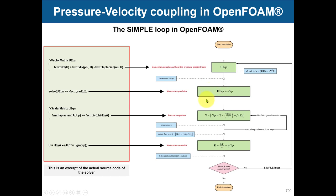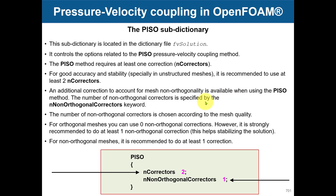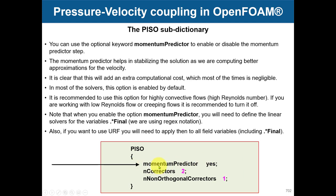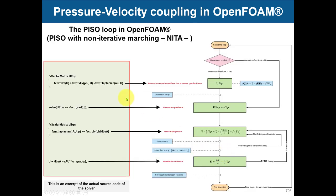Now let's talk about the PISO loop, which is used for unsteady simulations. It provides pressure-velocity coupling through the same mathematical manipulation. In the PISO loop you have new entries to control the looping: non-orthogonal correctors (similar to SIMPLE), PISO correctors, and the option to set the momentum predictor. The momentum predictor is recommended most of the time and is hard-wired on by default in OpenFOAM.